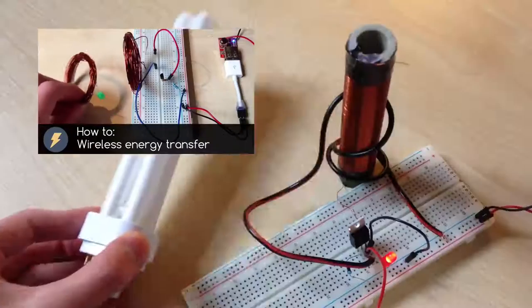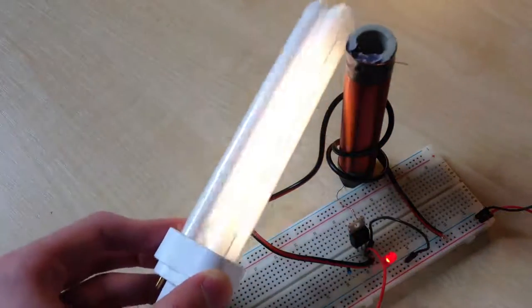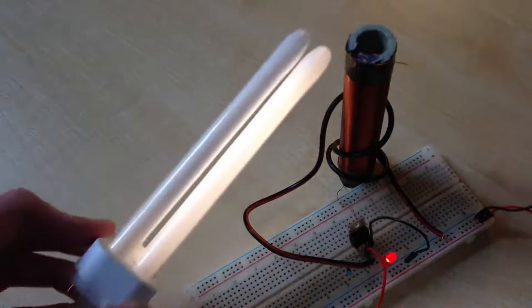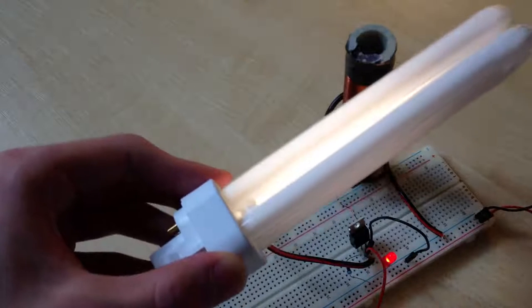In previous video I showed you a little bit of wireless transfer. In this video we built our homemade Tesla coil that can light even old fluorescent light bulb at a distance.